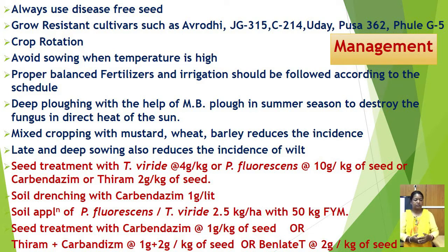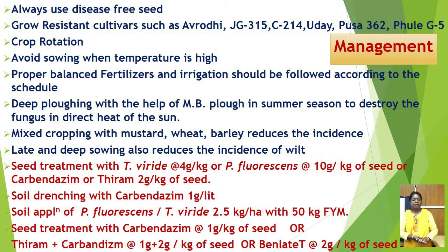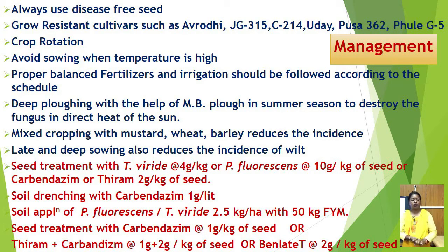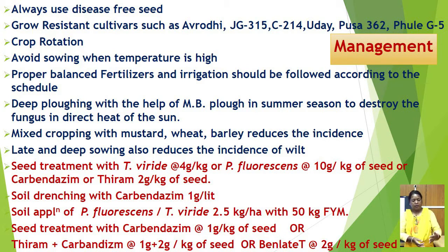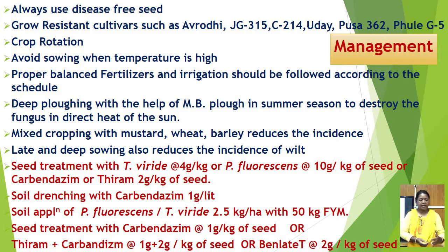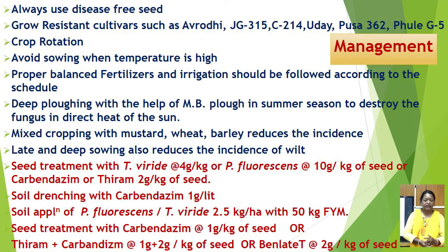For chemical control, seed treatment with bio-agent Trichoderma viride at the rate of 4 gram per kg of seed, or with Carbendazim and Thiram at the rate of 2 gram per kg of seed, eliminates seed-borne infection. When the disease appears in the field, soil drenching with Carbendazim at the rate of 1 gram per litre is also effective. Applying Pseudomonas fluorescens or Trichoderma viride enriched with farmyard manure at 2.5 kg per hectare with 50 kg farmyard manure is also recommended.